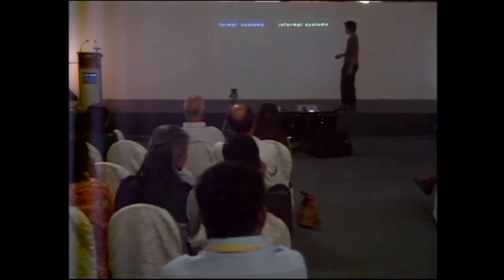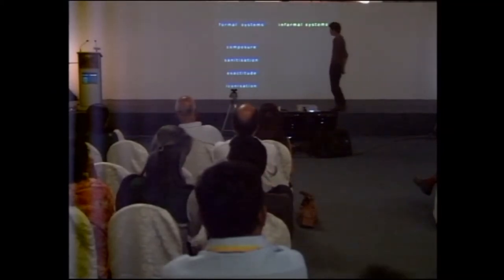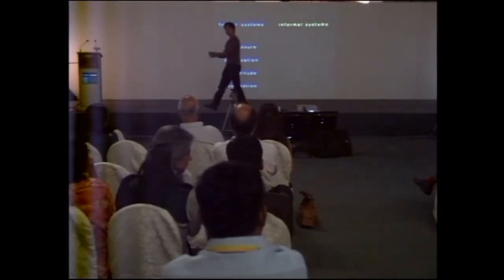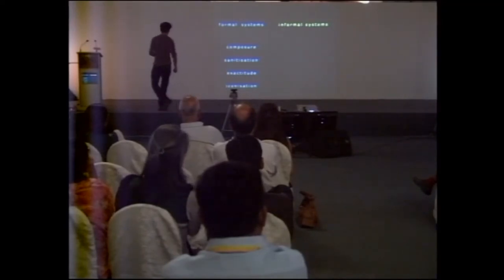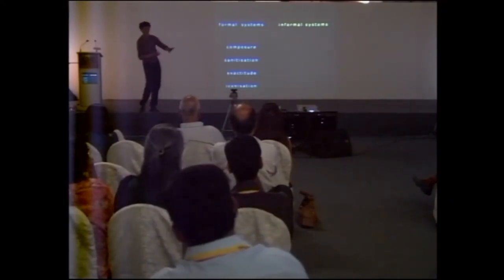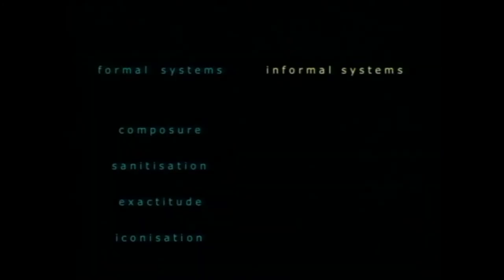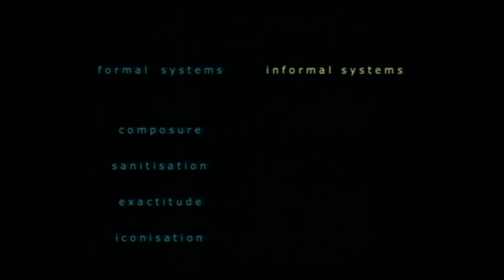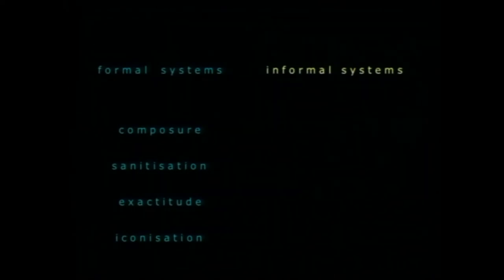I found that formal systems generally are made up of these four items: Composure, because you obviously need a certain degree of that to recognize it as a formal system. Sanitization, so that formal system is maintained and works from day to day. Exactitude, so that there's less maintenance or sanitization. And iconization, after a while, it doesn't matter whether you know what that formal system was for, you follow the thing.